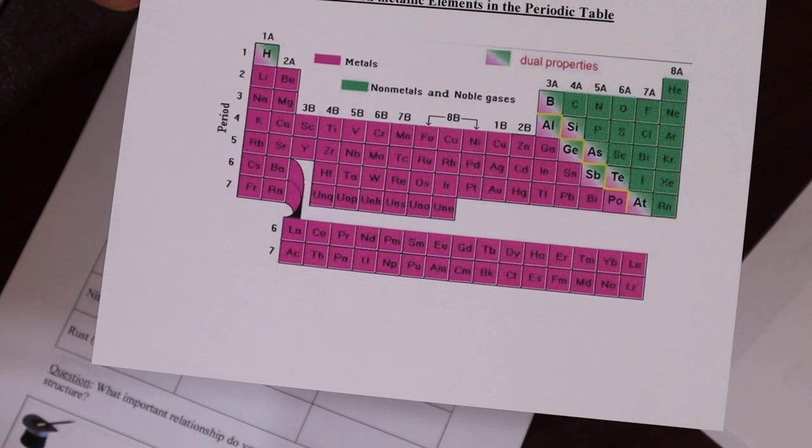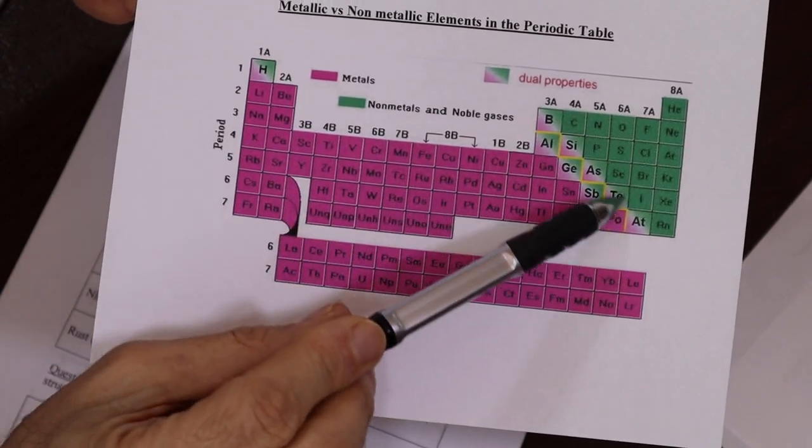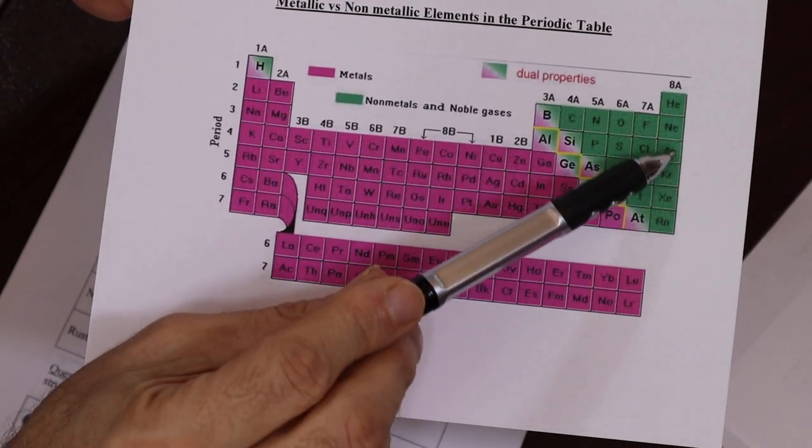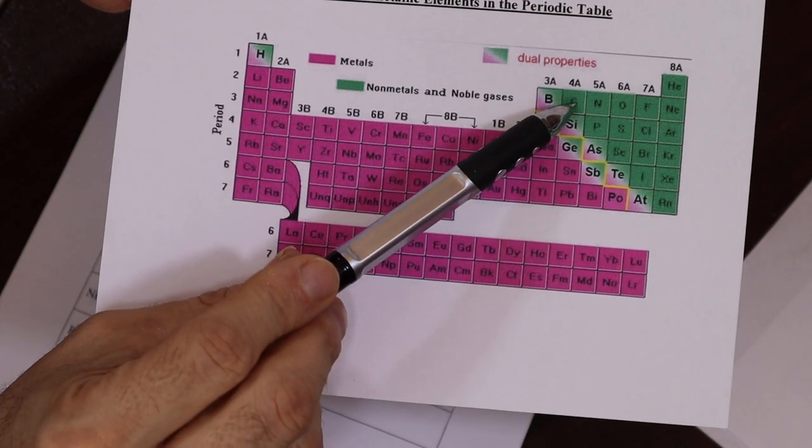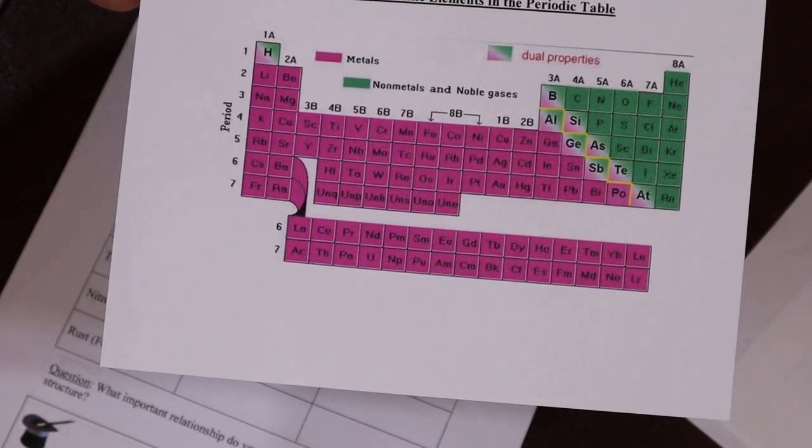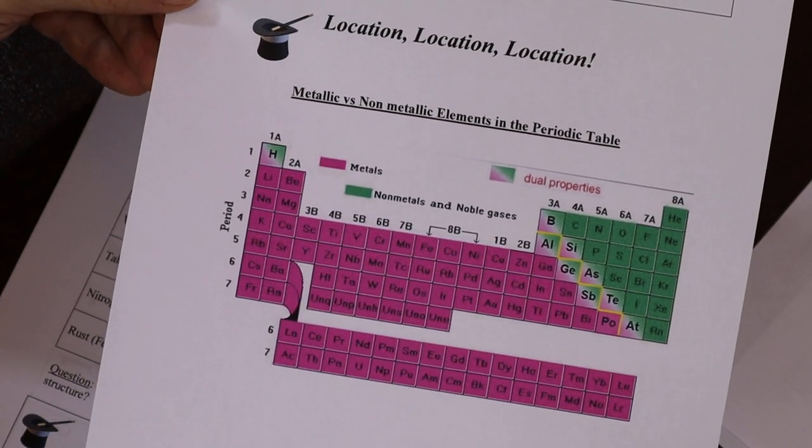So a lefty and a righty will always make an ionic compound with the theft of an electron if you wish. Whereas these two mixed together, anything from the green area mixed with another green, both strong, will make a covalent. Carbon and oxygen, carbon dioxide.